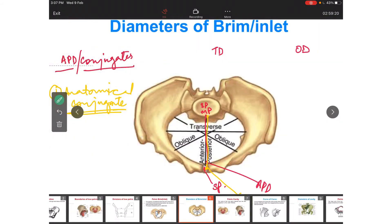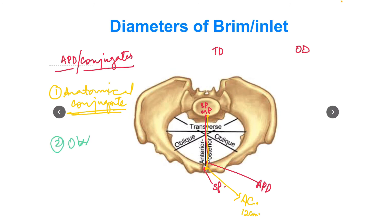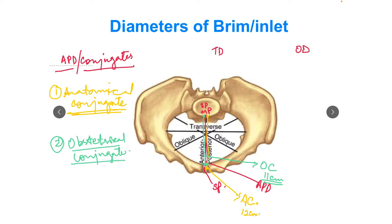दूसरा है obstetrical conjugate। Obstetrical conjugate measure होती है from the midpoint of sacral promontory to the posterior surface of symphysis pubis — यह होती है around 11 cm। यही वो diameter है जो available होती है for childbirth, इसीलिए obstetrical conjugate की importance सबसे ज़्यादा होती है।